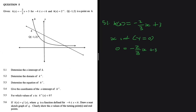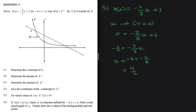We take 3 to the left-hand side, giving us minus 3 equals minus 2 divided by 3x. So x equals minus 3 divided by (minus 2 divided by 3). If you put that in your calculator, you should get x equals 9 divided by 2, or x equals 4.5 — they are the same thing. So the coordinates for our x-intercept are (9/2, 0).